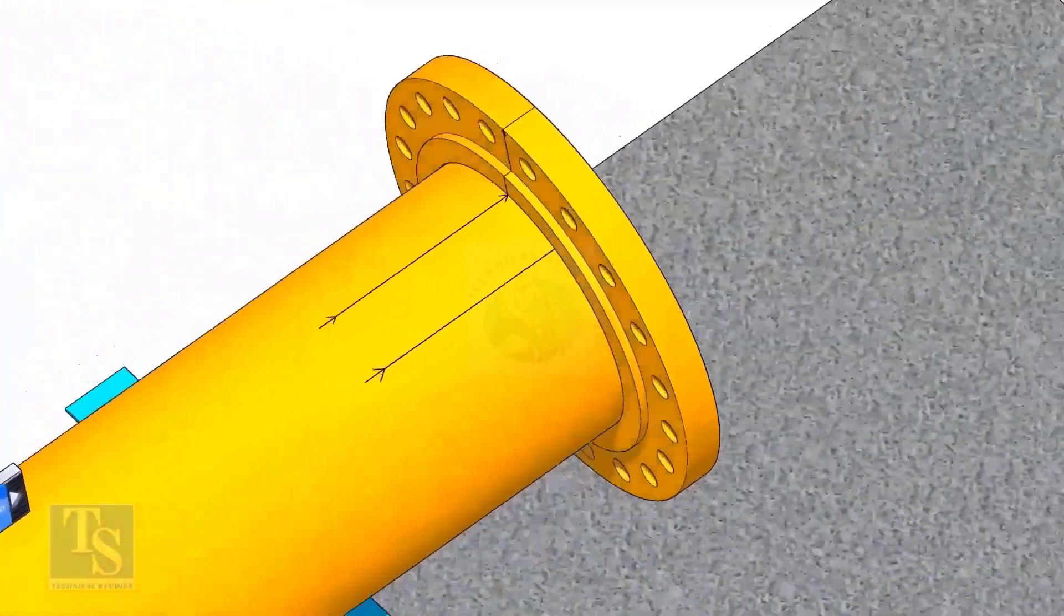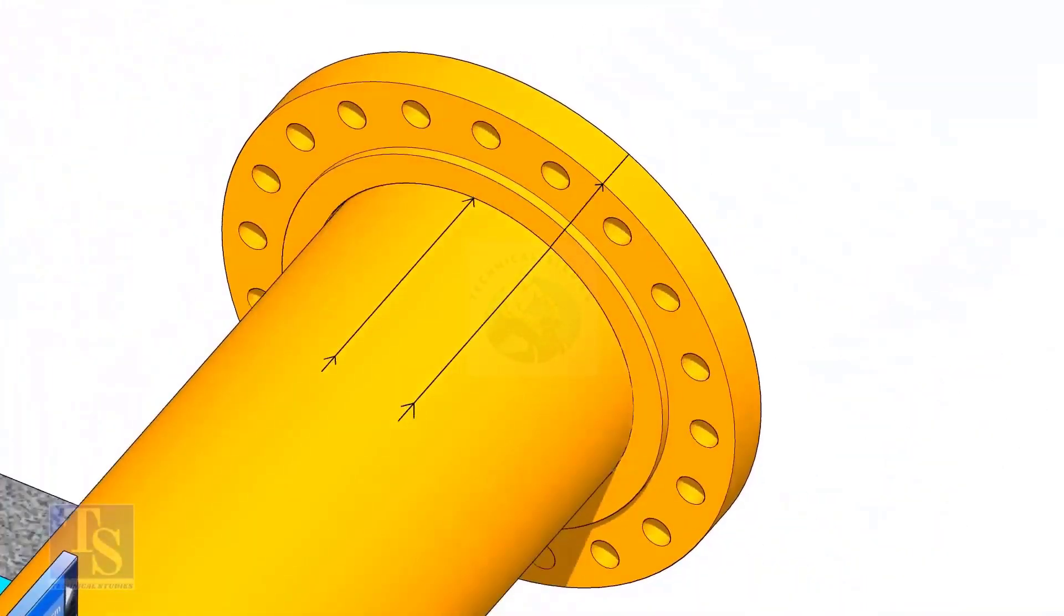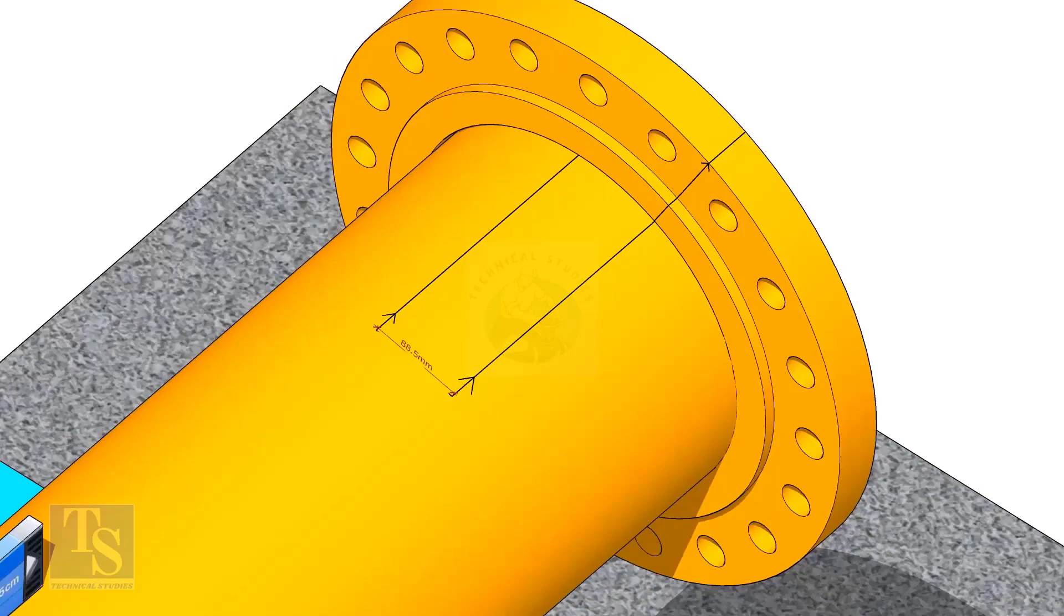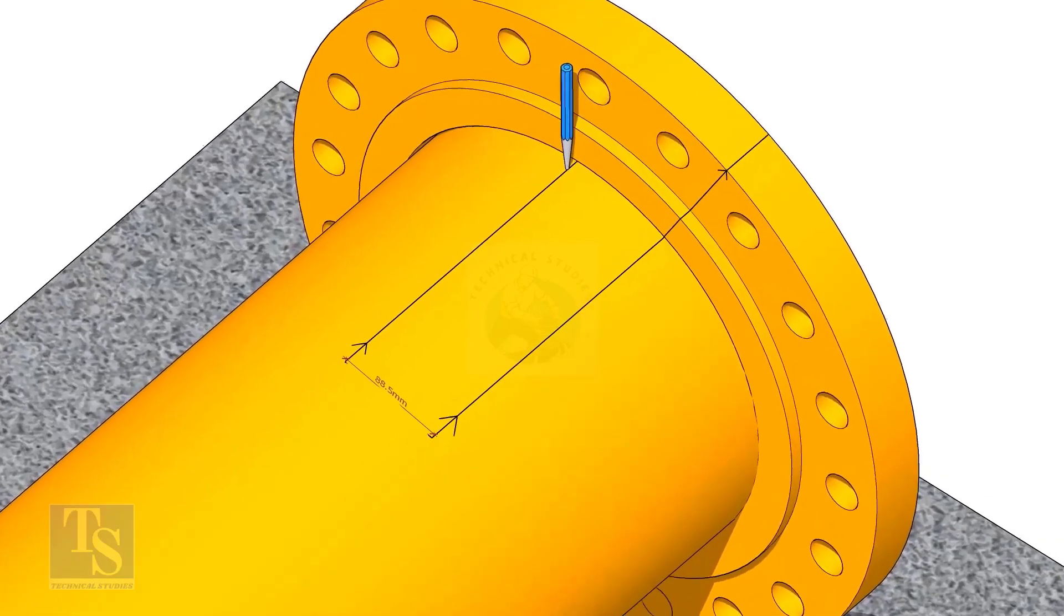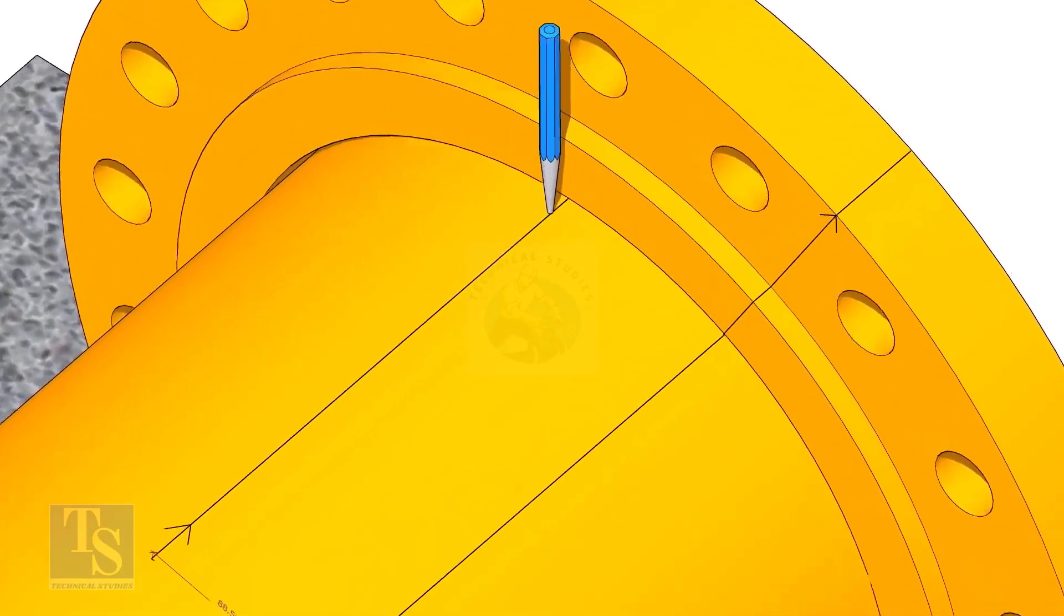Put the flange on the pipe. Rotate the flange until the center line on the flange and the 25 degree line on the pipe comes in a line. Don't forget to punch mark the center lines.